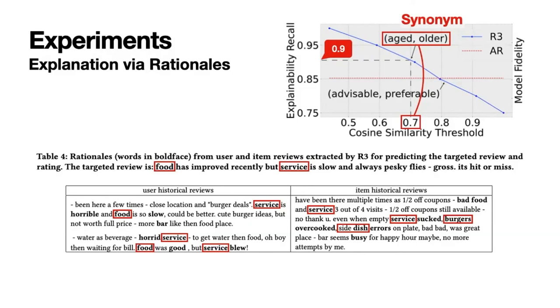We also present some rationale examples extracted by the proposed method. Consider the context of recommending a restaurant to a user. R3 can find that the user was more concerned with food quality and service quality. Meanwhile, R3 also finds the restaurant reviews that contain aspects and opinions about food and service. The targeted review verifies that the extracted rationales from historical reviews are indeed highly consistent with the targeted review.